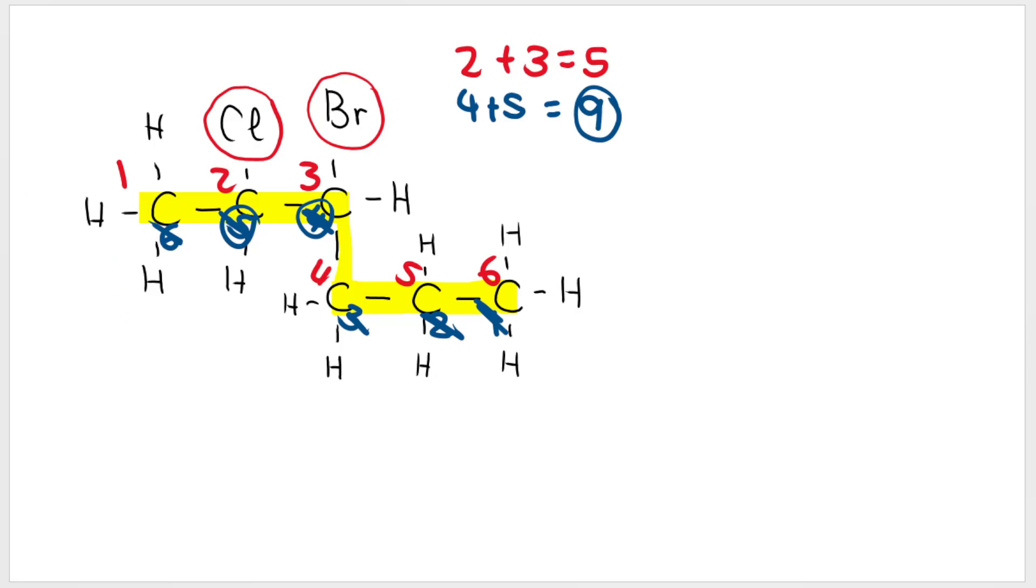Remember, when we name a compound, the branches have to be in alphabetical order. So bromo is going to come before chloro. That means in my name, it's going to be 3-bromo-2-chloro. How many carbons in the main chain? Six. So hexane.